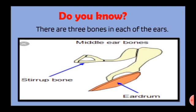Did you know there are three bones in each of the ears? The stirrup is the smallest bone in our body. It is as small as a grain of rice and is hollow, and its shape is like that of a stirrup. In the human body, the longest and the strongest bone is the thigh bone, or the femur.